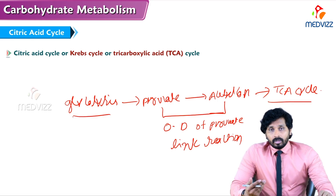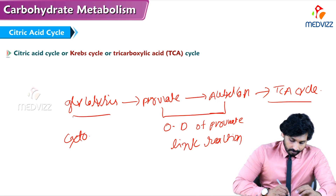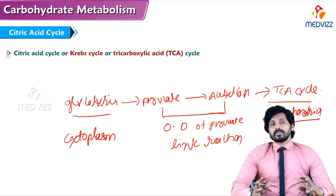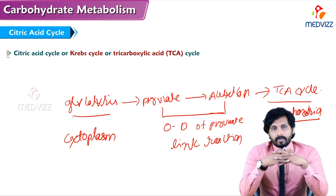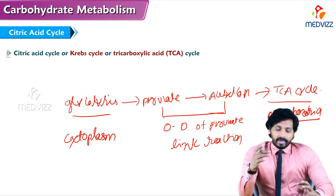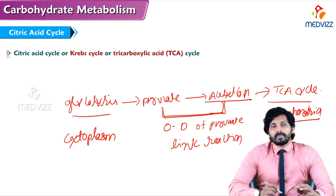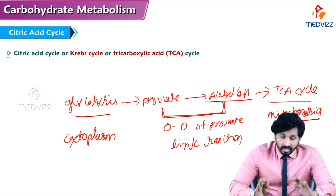Glycolysis takes place in the cytoplasm and TCA cycle takes place in mitochondria. Pyruvate cannot directly enter mitochondria because mitochondria has a rigid membrane which will not permit pyruvate to enter. So pyruvate takes another route, converting into acetyl-CoA, which can easily permeate the mitochondrial membrane and participate in TCA cycle.